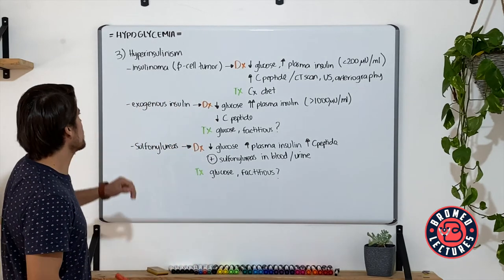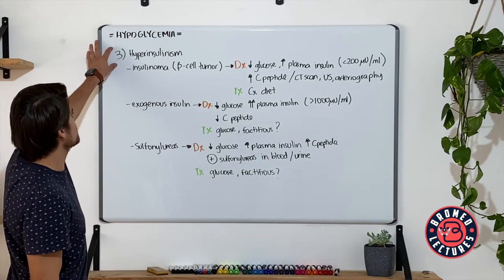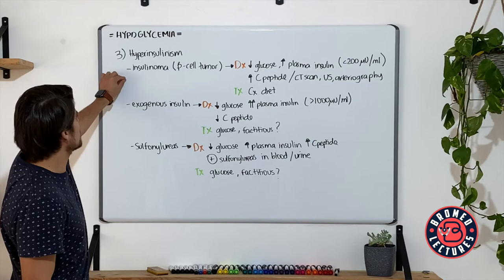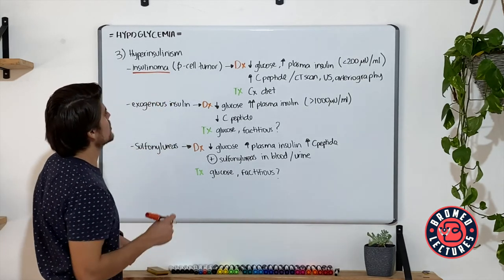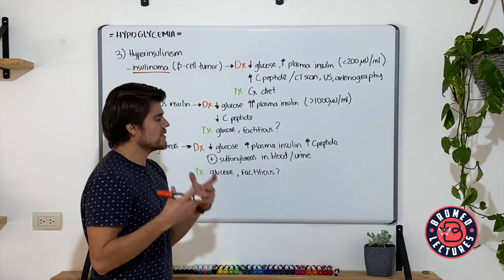And lastly, it's going to be for the hyperinsulinism patients. The first one is going to be insulinomas. Remember that these are beta cell tumors. So what they do is they secrete insulin.